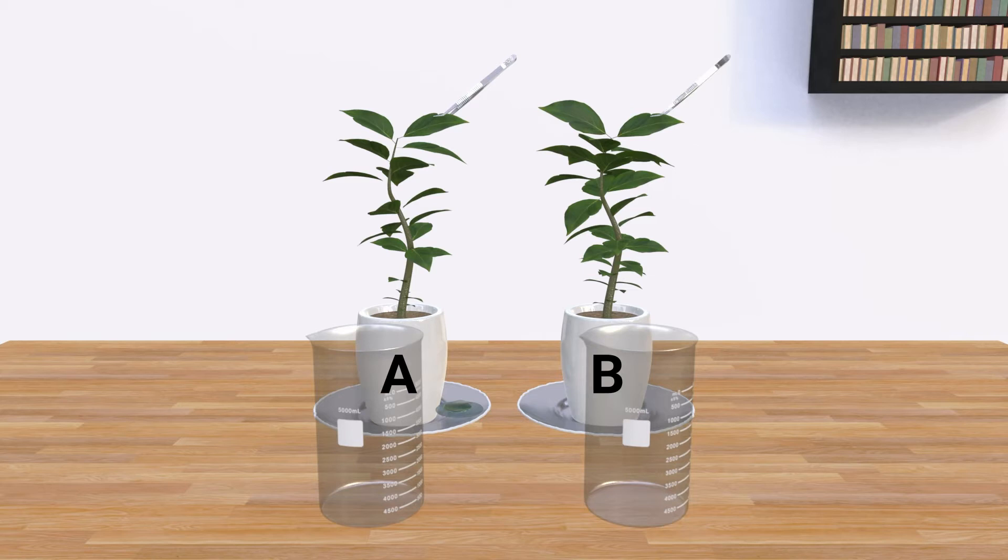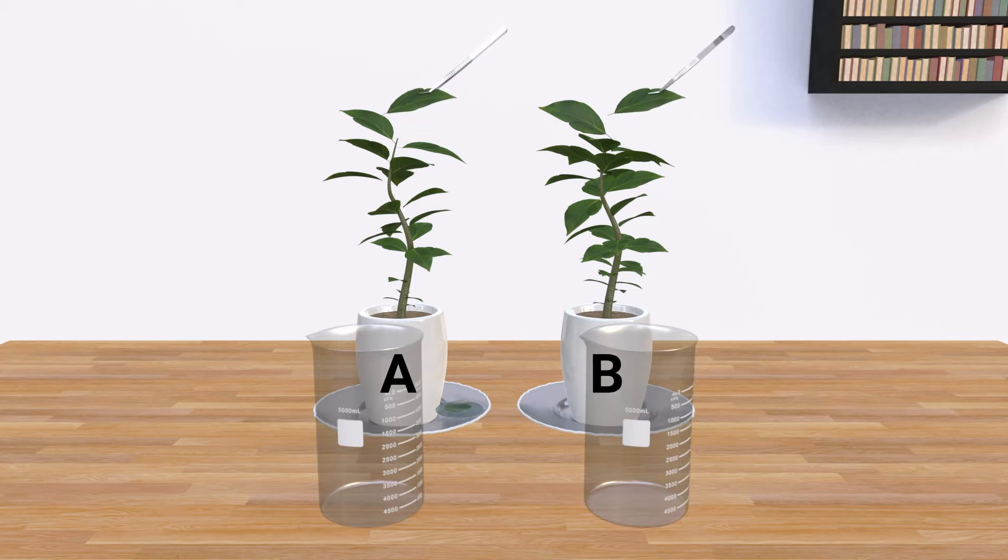Pluck a leaf from each plant and place it in a separate beaker and add ethyl alcohol to each beaker.